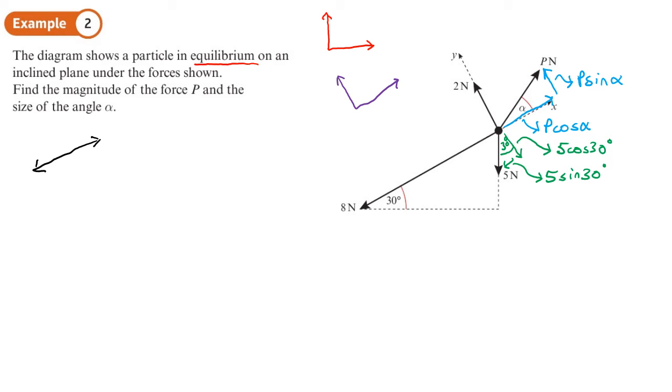So let's start by looking at the forces which are parallel to the slope. So the forces which are going that way are going to be balanced. So we have 8 that's going down and 5 sin 30 that's going down the slope. And going up the slope, we have P cos alpha. So that's one equation. It's got two unknowns. So we're going to need another equation. And we'll get that by resolving the forces perpendicular to the slope. And we have 2 going up perpendicular to the slope. And we have the P sin alpha going up. And then going down, we have the 5 cos 30.